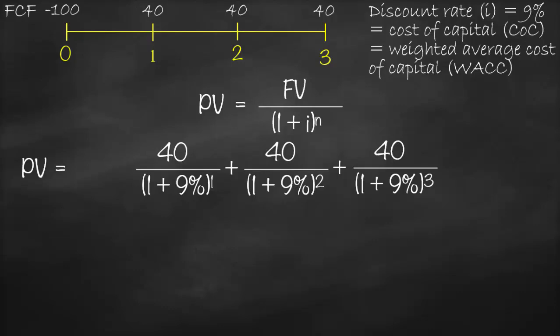For the third year: 40 million divided by (1 + 9%) to the power three. This gives us all future cash flows discounted to present value, but we haven't included the initial investment of negative 100 million dollars paid at time zero. We need to add that cash outflow, and when we do, this is called net present value.